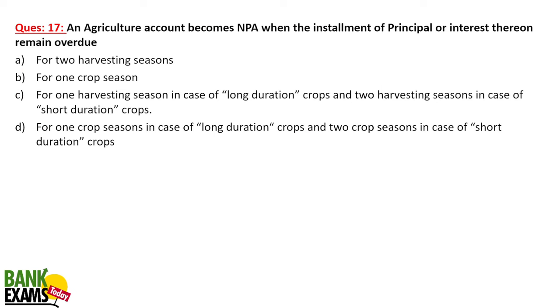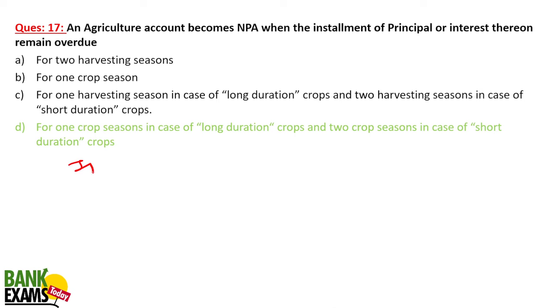An agriculture account becomes NPA when the installment of principal or interest thereon remains overdue for one crop season in case of a long duration crop, or two crop seasons in case of a short duration crop. That is a very important question.